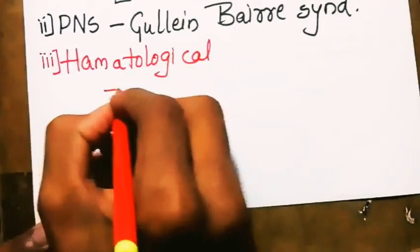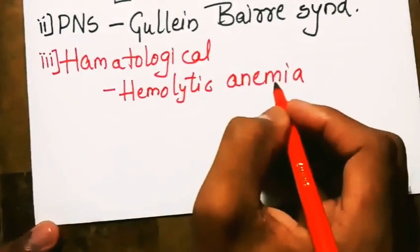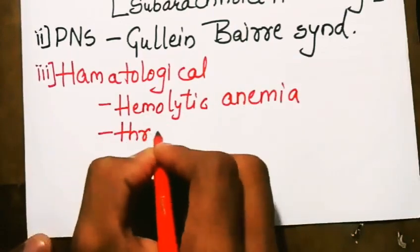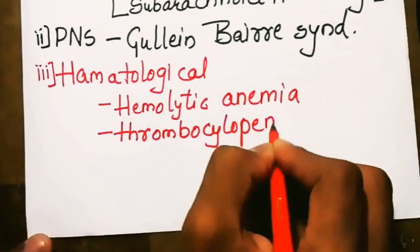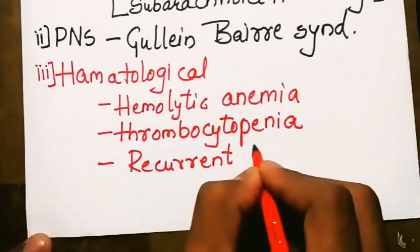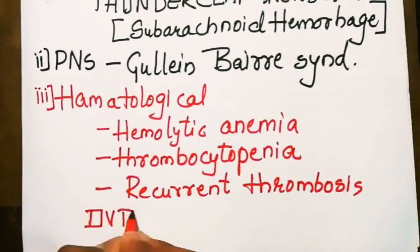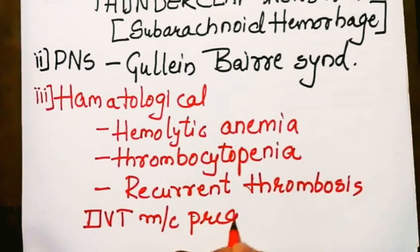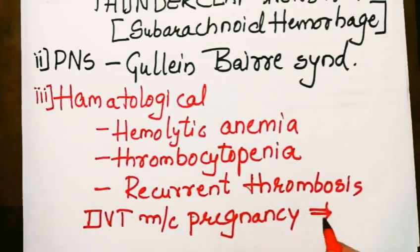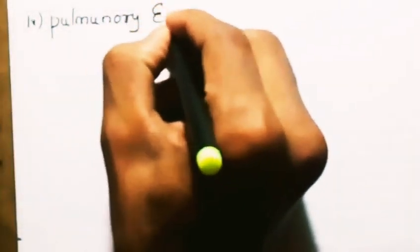Going to hematological disturbances, we will see hemolytic anemia and thrombocytopenia. We also see recurrent thrombosis like DVT, most common during pregnancy, and pulmonary embolism.